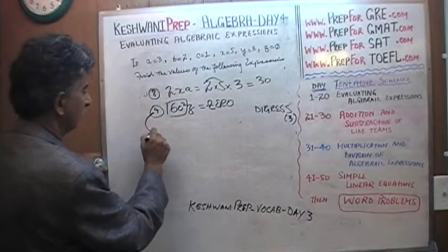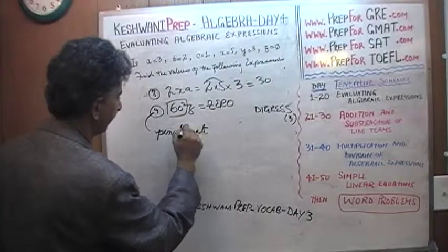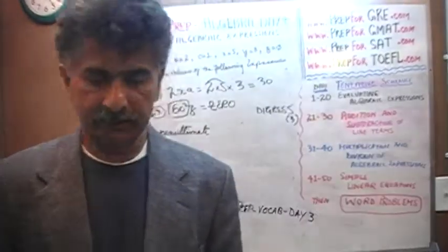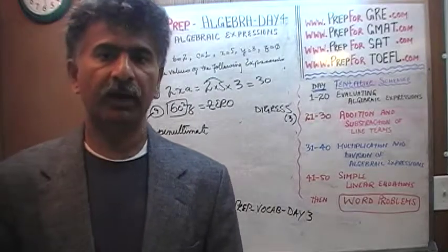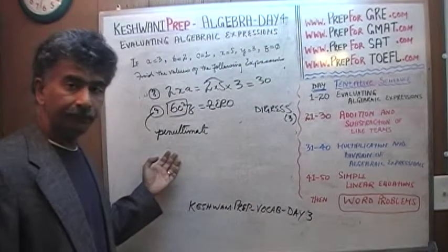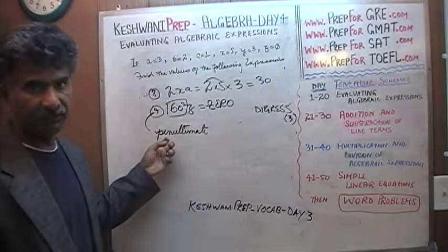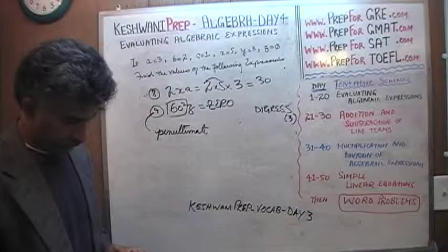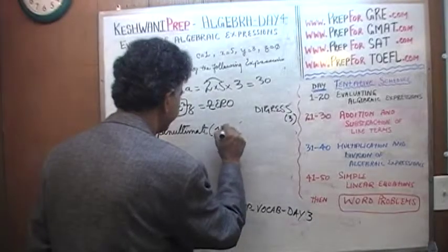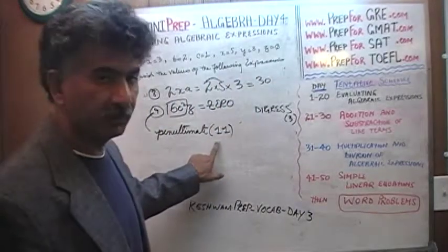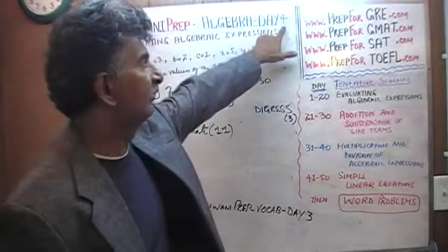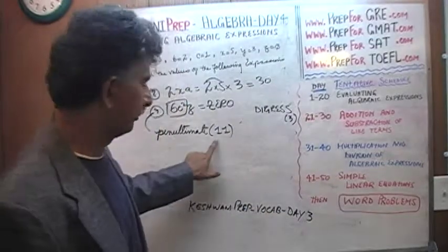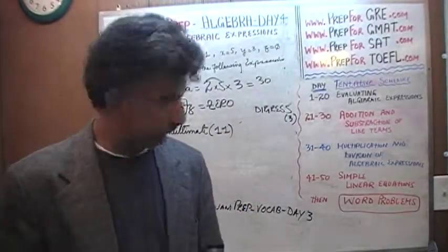I refer to number nine a second ago as the penultimate one. And we learned this word yesterday also I believe it was penultimate, which simply means it's a very fancy way of saying second to the last. If something is second to the last it is referred to as the penultimate. Make sure that you pronounce it properly. It is not to be pronounced penultimate. It is not penultimate, it's penultimate. Penultimate means second to the last. When did we learn it? What day number? Day number 11. When you want to learn the word penultimate, just type in Keshwani Prep dash vocab dash day 11 without the parentheses. Use that tag and you will learn it.